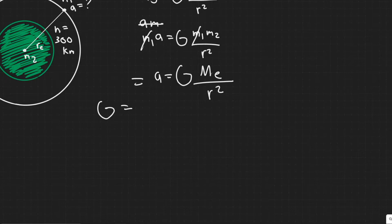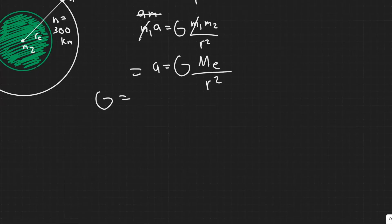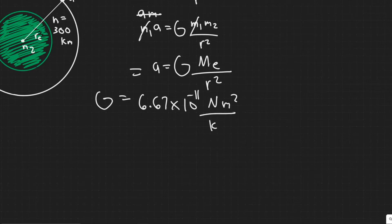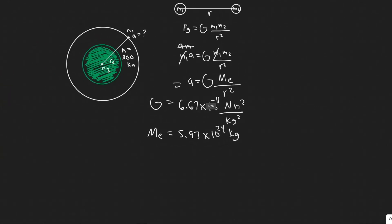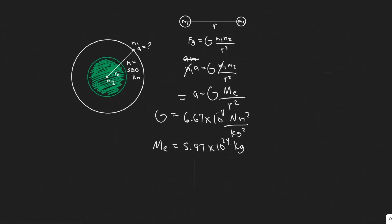You need to know G and Me. G is the gravitational constant: 6.67 times 10 to the minus 11 Newton·meters squared per kilogram squared. The mass of the Earth is another value you should memorize: 5.97 times 10 to the 24 kilograms. So we have the gravitational constant, we have the mass of the Earth, and then we need to solve for the radius r.